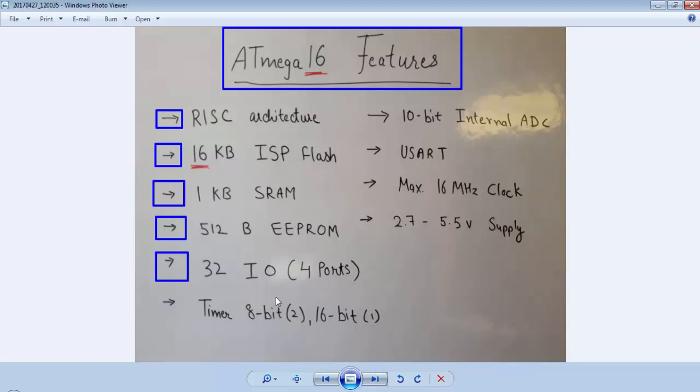It has 32 pins for input-outputs arranged in 4 ports, 2 8-bit timers and 1 16-bit timer, 10-bit internal ADC, USART for serial communication, maximum 16 MHz clock, and this is very important: the operating supply for the microcontroller is minimum 2.7 and maximum 5.5 V for ATMEGA 16.